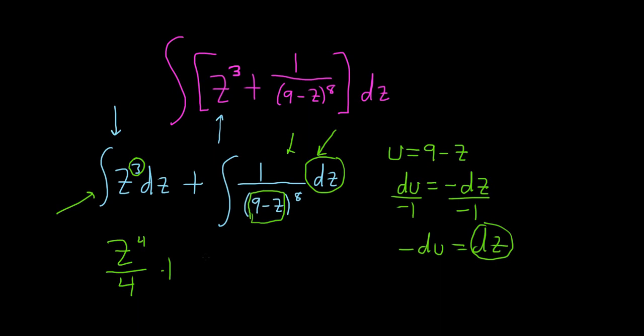This one here is going to be plus. Oh, I guess it should be minus, right? Because the dz is negative du. So I'll go ahead and pull out the negative. It'll be 1 over u to the 8th. That's because that piece there was u. And then we have our du.